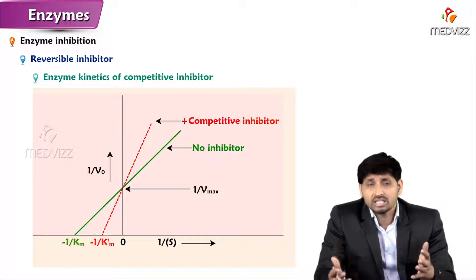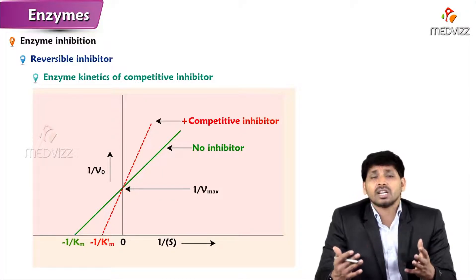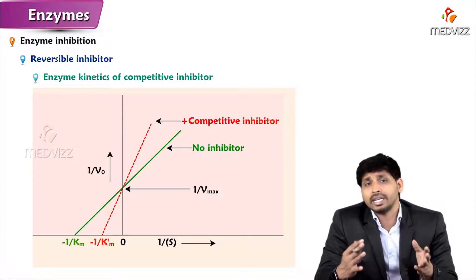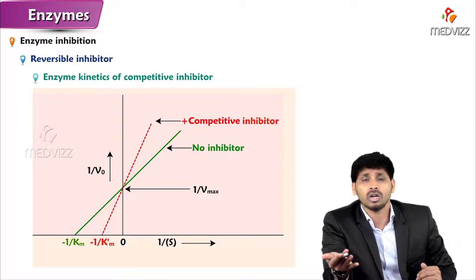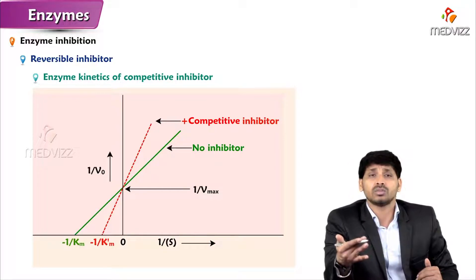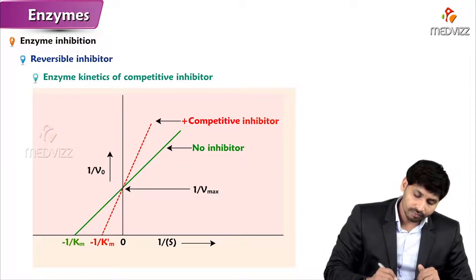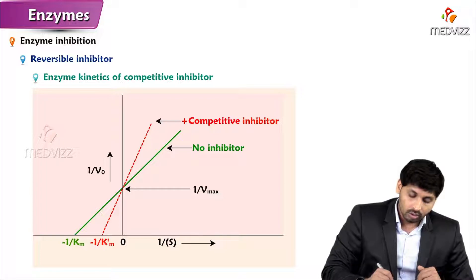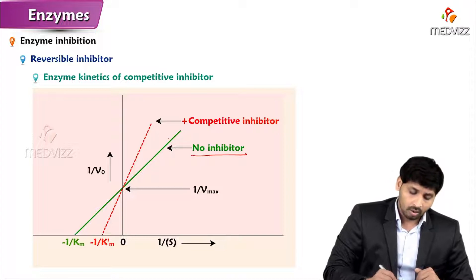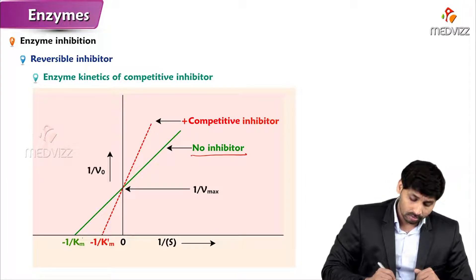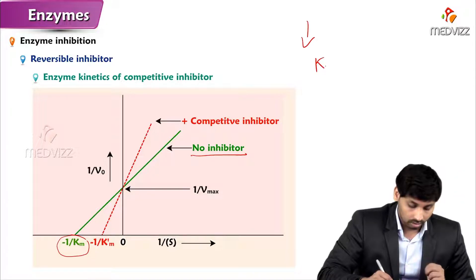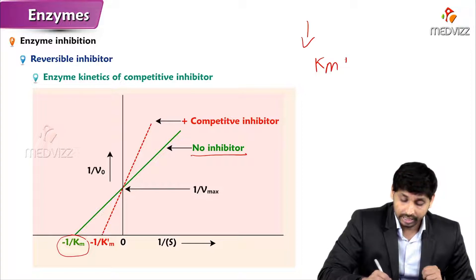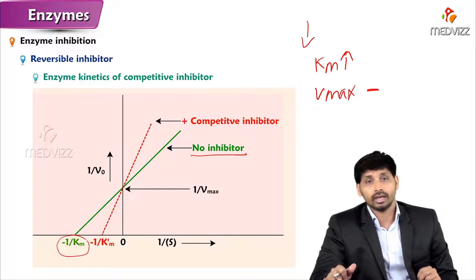Enzyme kinetics allows us to assess different enzyme activities and behavior. Using the Lineweaver-Burk double reciprocal plot, we can study types of inhibition. In the presence of a competitive inhibitor, the Km value increases — meaning higher substrate concentration is needed — while Vmax remains unaltered. Without inhibitor, normal Km and half-Vmax are observed, but competitive inhibition raises the apparent Km without changing the maximum velocity.